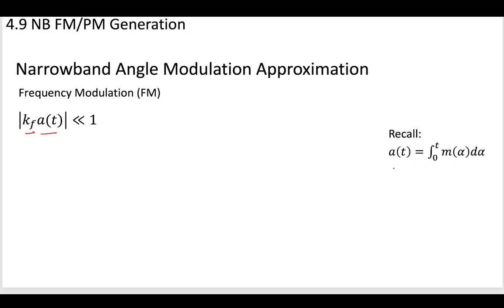Recall that a(t), based on the message, is the integral of the message. To have a narrowband FM signal, this should be much smaller than 1. In practice, this is hard to do—many real signals are not actually like this. But we'll return to this idea because it will help us see how we can do this modulation.